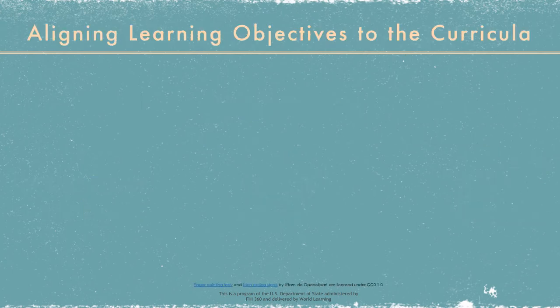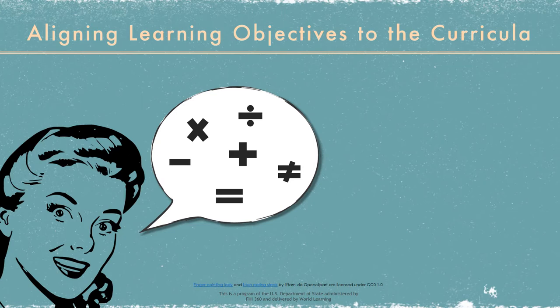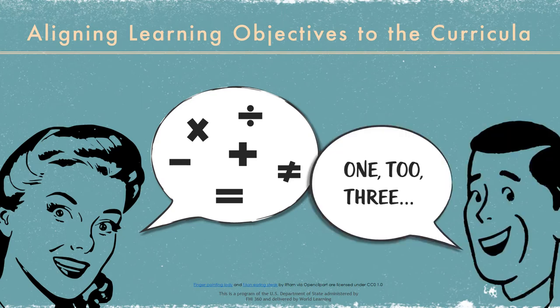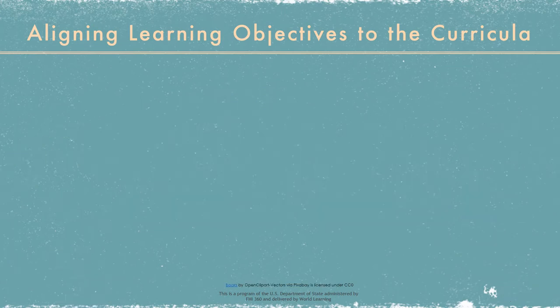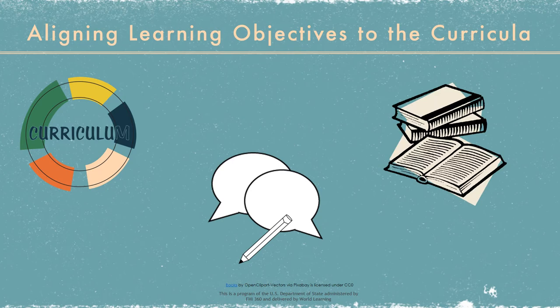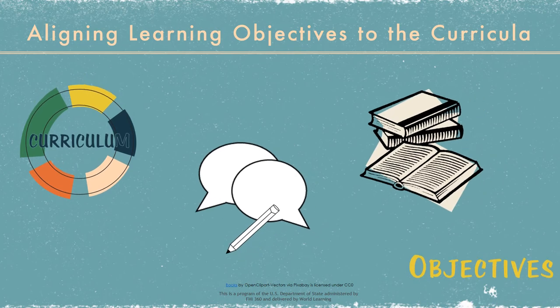Aligning learning objectives to the curricula. Consider how differently you would teach a math class in EFL if students were going to be: A, tested on their math comprehension, versus B, tested on their English proficiency. Different learning objectives require very different types of curricula, syllabi, activities, and materials. CBI programs are more successful when the program curriculum, activities, and materials are aligned with the program objectives.